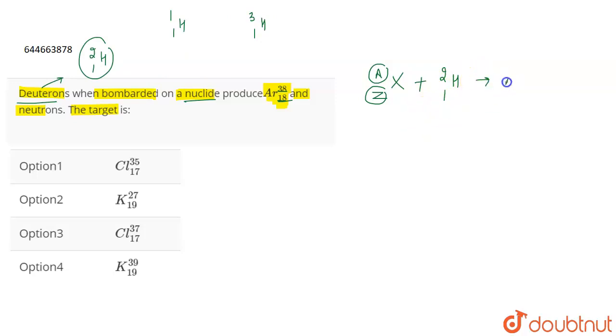Now, it leads to the formation of argon 38-18 and neutrons. Neutrons are formed here. So, neutron can be represented as 1 and 0. It has a 0 atomic number. This is how you represent a neutron.